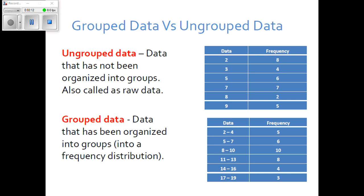We actually have two types of data. One is called group data and the other is called ungroup data. Ungroup data is data that has not been organized into groups — also called raw data. If we don't have any order or ranking in our data or scores, it means that data is raw or ungrouped data.